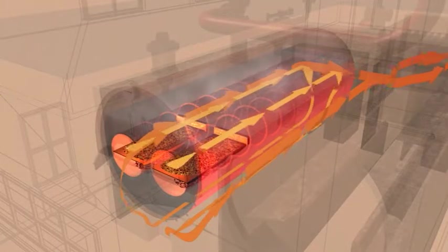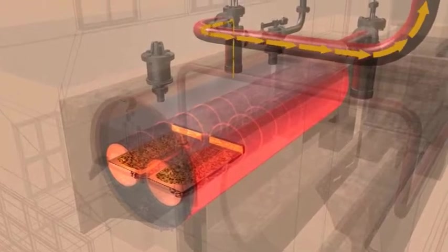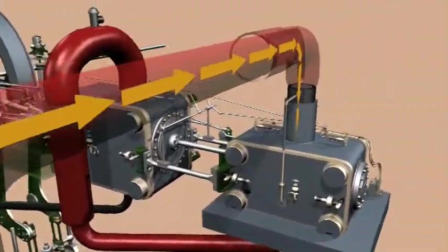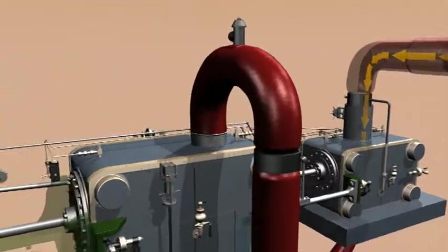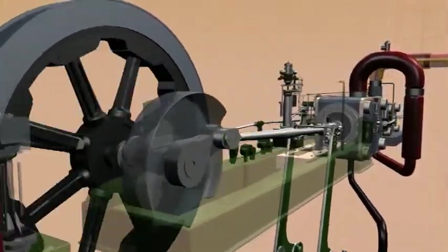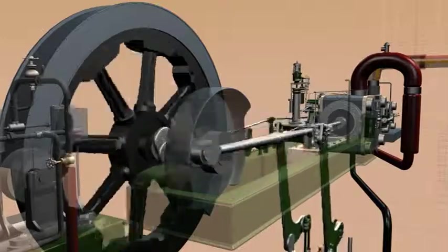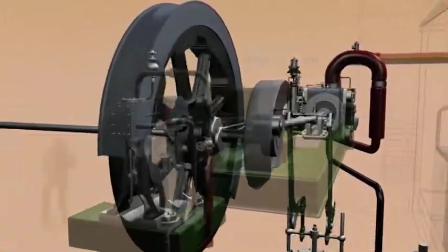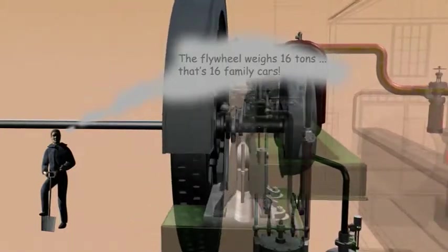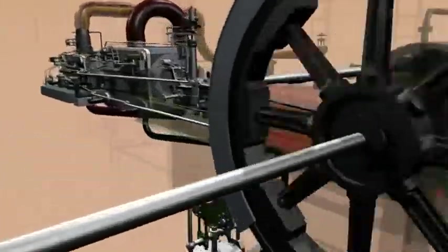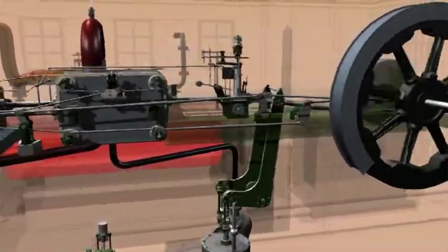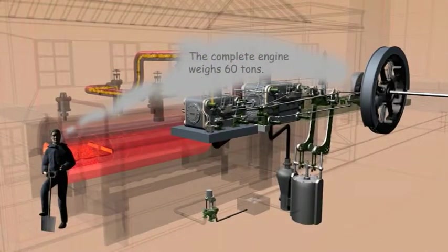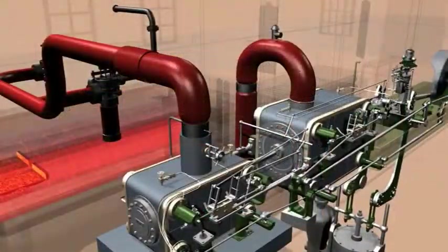The steam travels through the red pipe from the boiler to the engine room. The steam first enters the high pressure cylinder.